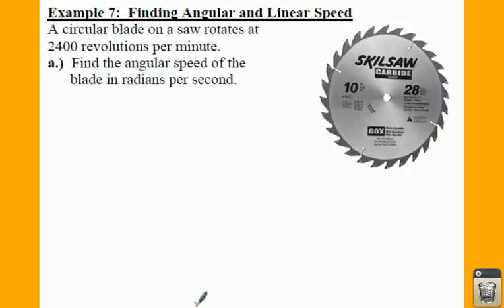Alright, so finally, the last example here for section one. Here we're going to be finding both angular and linear speed. So we're talking about a circular saw blade. It rotates at 2,400 revolutions per minute.